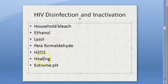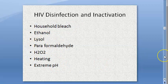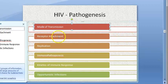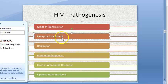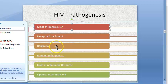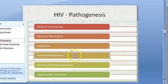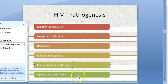HIV virus can actually be killed or inactivated by bleach, ethanol, Lysol, formaldehyde, hydrogen peroxide, heating, and extreme pH. In pathogenesis we saw: mode of transmission, receptor attachment of the virus to our host cell, replication inside the host cell, immunopathogenesis, kinetics of immune response, and opportunistic infections.